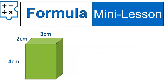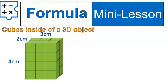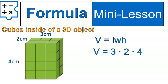Here is the formula. We're trying to find how many cubes are inside an object, and the way we do that is length times width times height. It doesn't matter the order you put the numbers in. So putting in 3 as the length, 2 as the width, and 4 as the height — or switching them around — you're multiplying, and you'll get the same exact result. Our volume is 24 cubic centimeters.